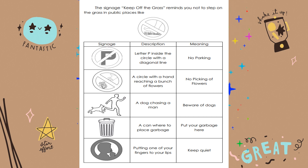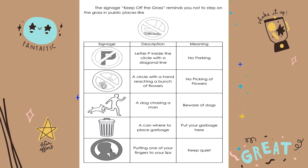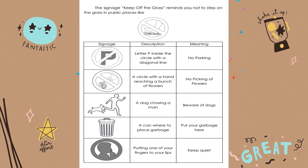The signage 'keep off the grass' reminds you not to step on the grass in public places. Similar signages are the following. Signage number 1: the letter P inside a circle with a diagonal line — meaning no parking. Number 2: a circle with a hand reaching a bunch of flowers — meaning no picking of flowers. Number 3: a dog chasing a man — meaning beware of dogs. Number 4: a can where to place garbage — meaning put your garbage here. Number 5: putting one finger to your lips — meaning keep quiet.